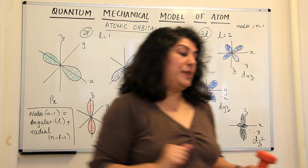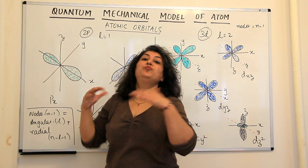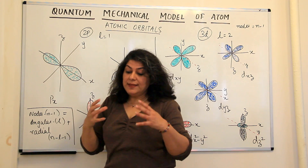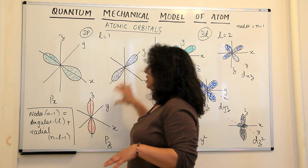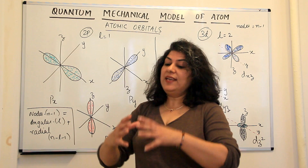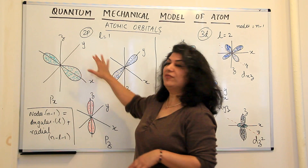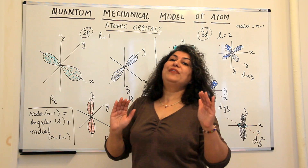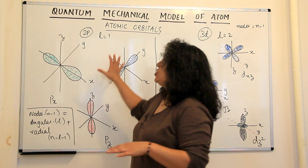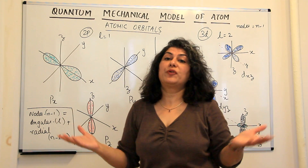There are three P orbitals in every shell. For example, there would be three 2P orbitals, with the value of L equal to one. These three P orbitals are all identical in shape, size, and the energy of electrons. The size of 3P orbitals would be larger than 2P orbitals, but they will have the same shape, and the energy of electrons would be more.